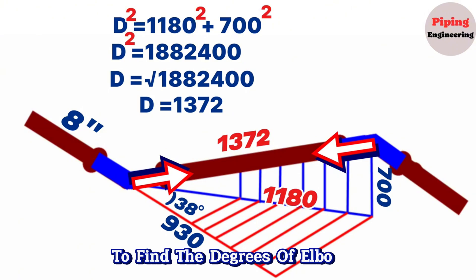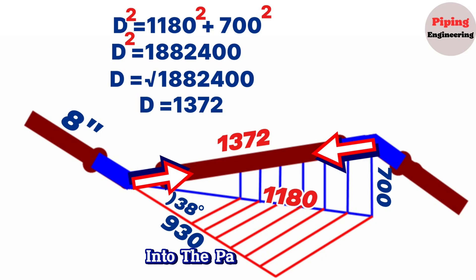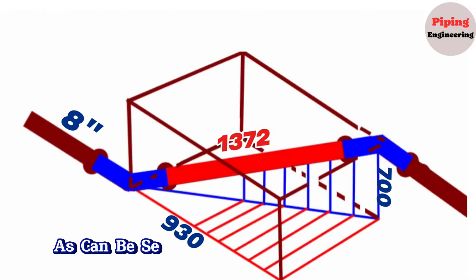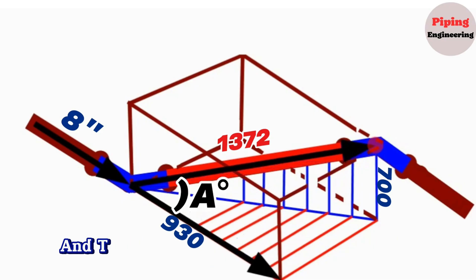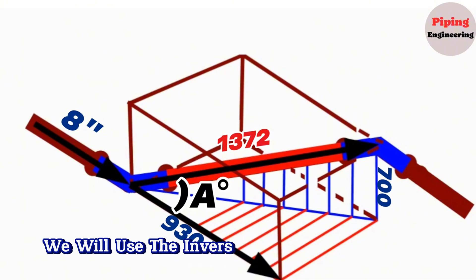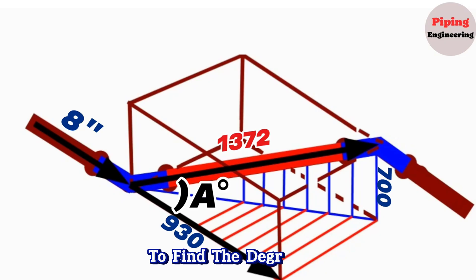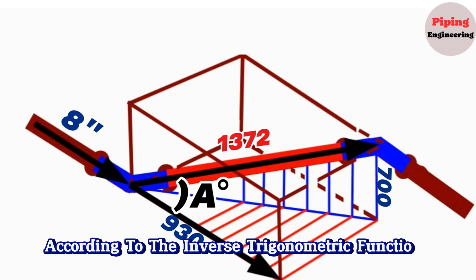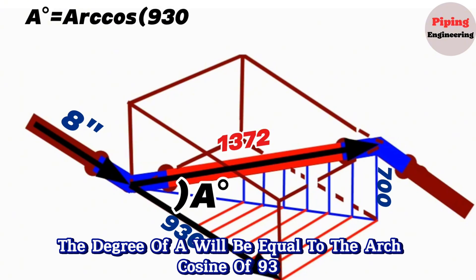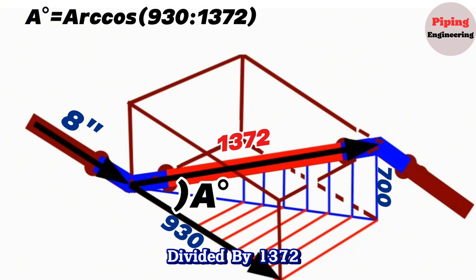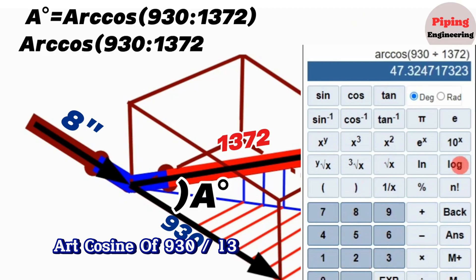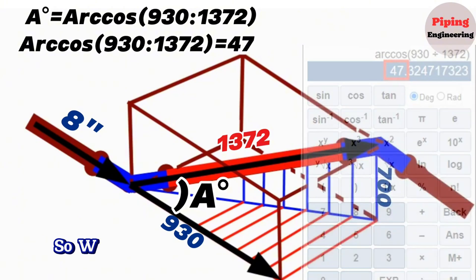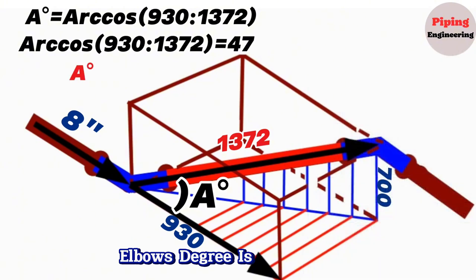To find the degrees of the elbows, let's show the double rolling portion of the pipeline inside a parallelogram. The 8-inch pipeline heading south goes 930mm south after the first elbow, then turns angle A until the second elbow. In such situations, we will use the inverse trigonometric function method to find degree A. According to the inverse trigonometric function method, the degree of A equals arc cosine of 930 divided by 1372. Using a scientific calculator, arc cosine of (930 ÷ 1372) equals 47°. So the below red elbow's degree is 47 degrees.